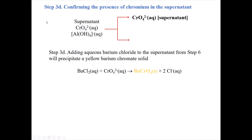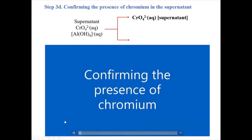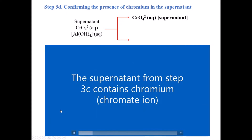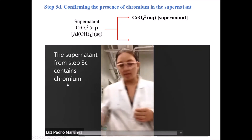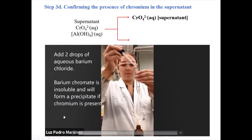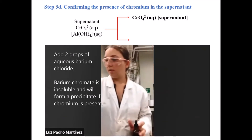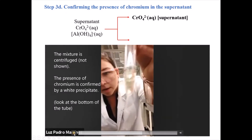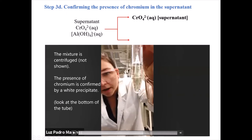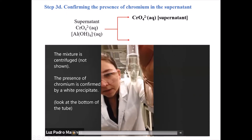For chromium, the confirmatory test is relatively simple. From the supernatant from step 3C containing the yellow chromate solution, we add aqueous barium chloride. Barium chromate is insoluble per solubility rules, so it precipitates as a yellow solid. The precipitation of a yellow barium chromate precipitate is the confirmatory test for chromium.